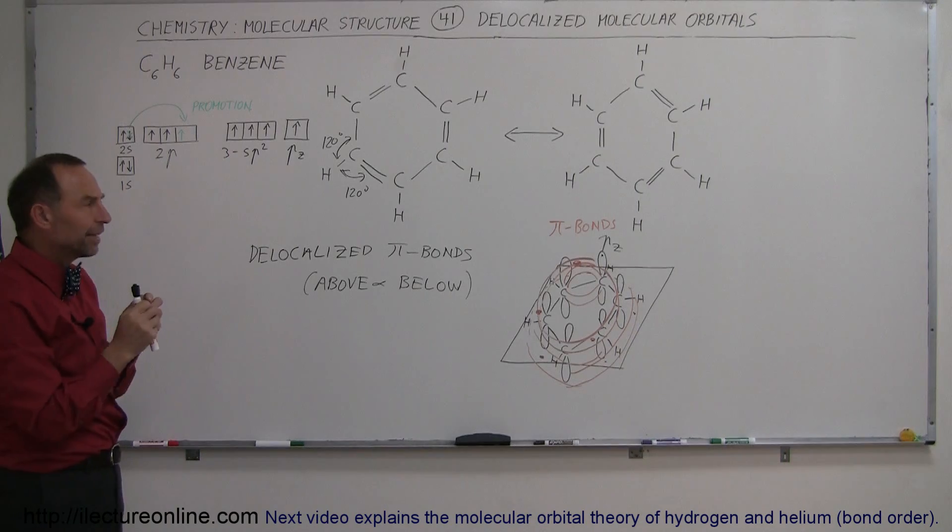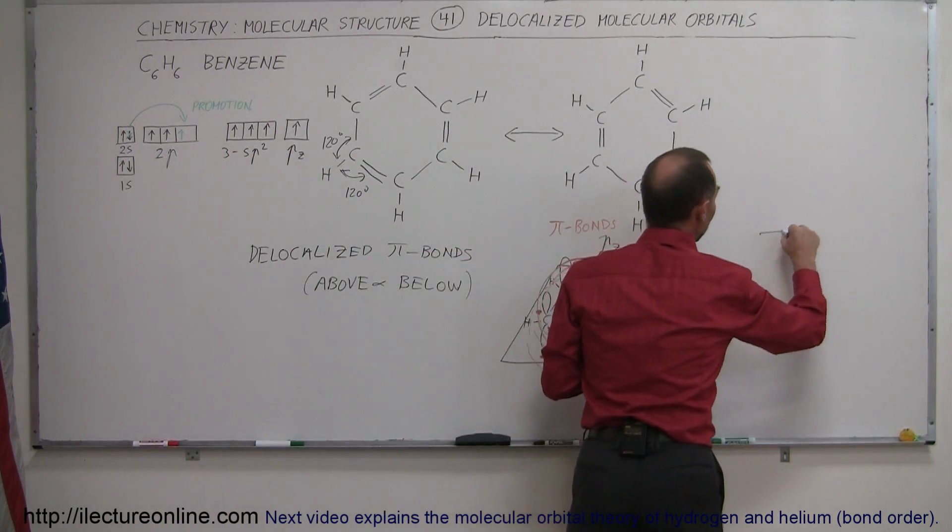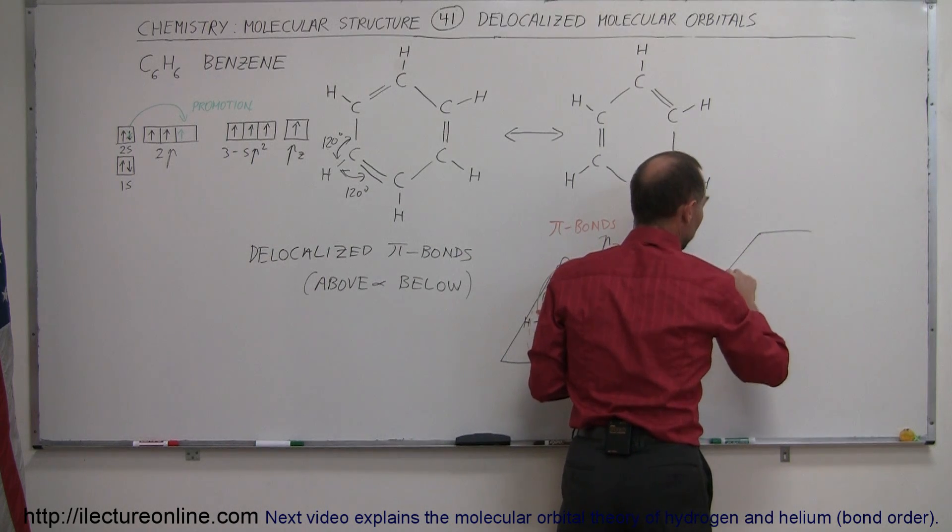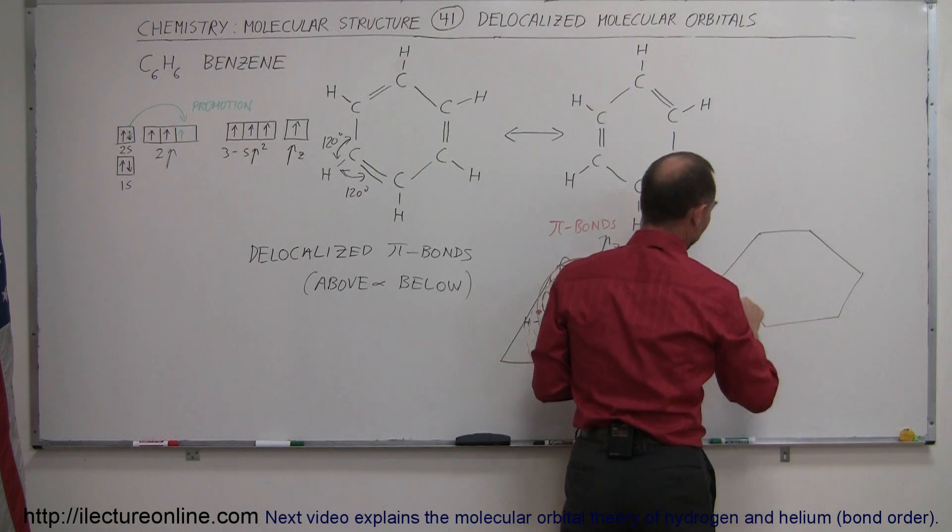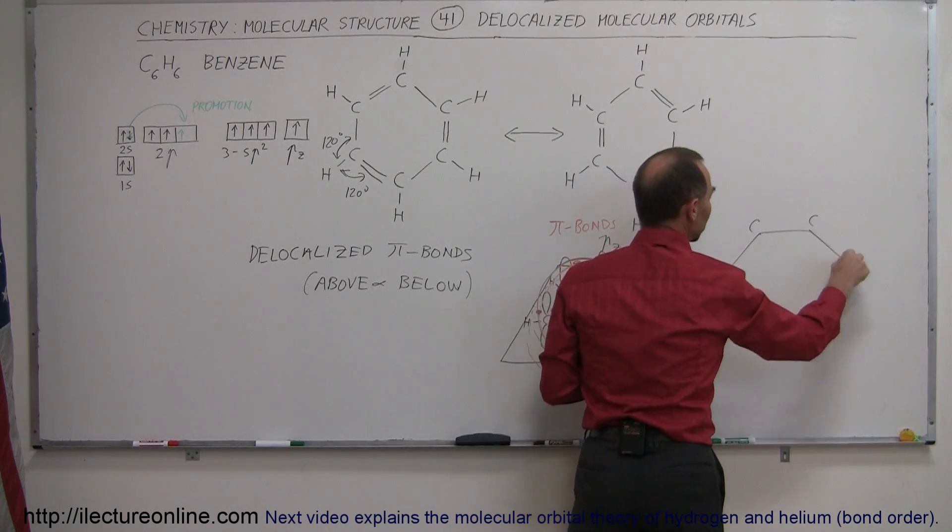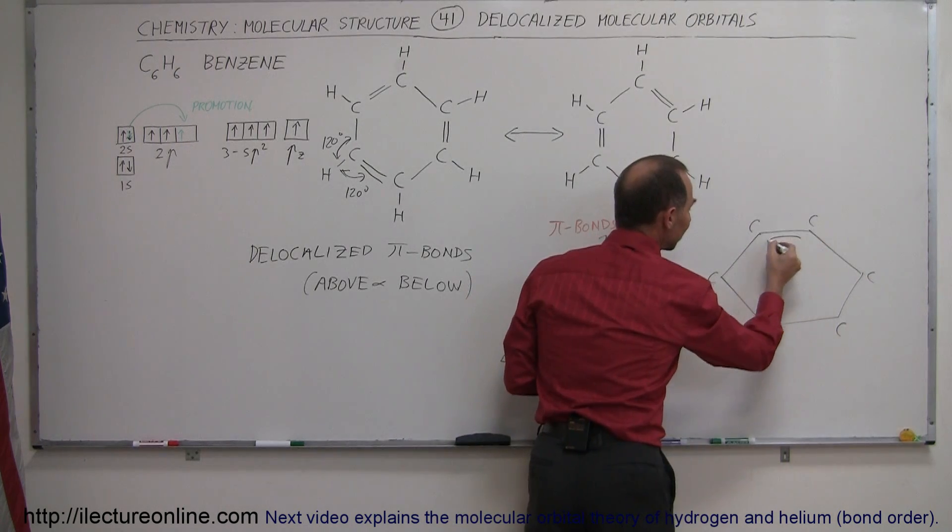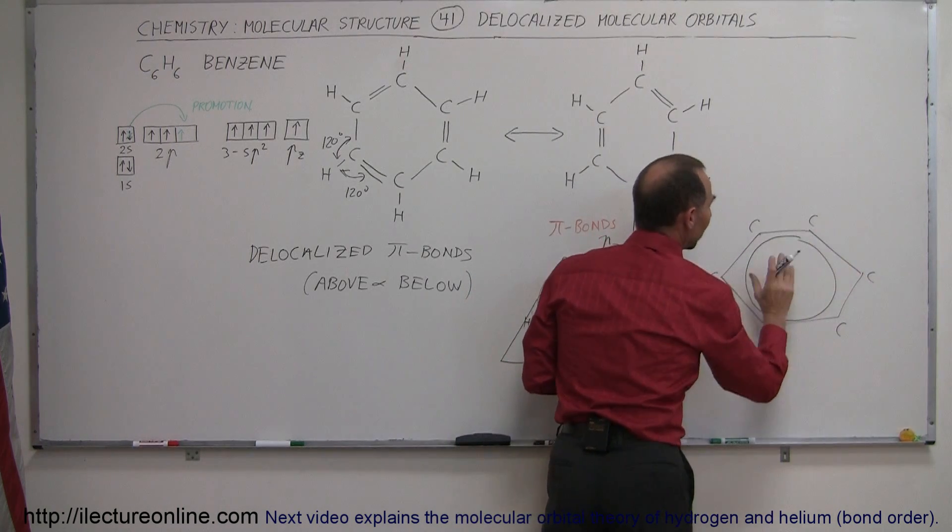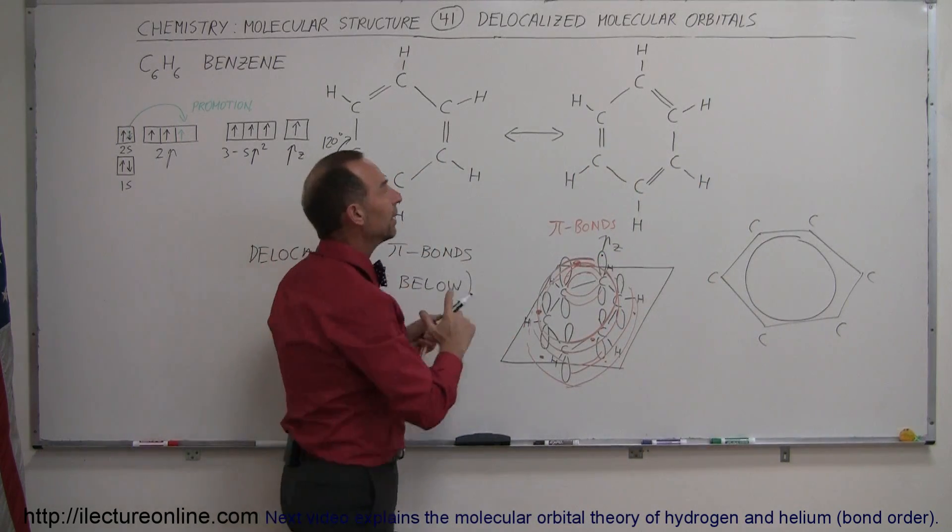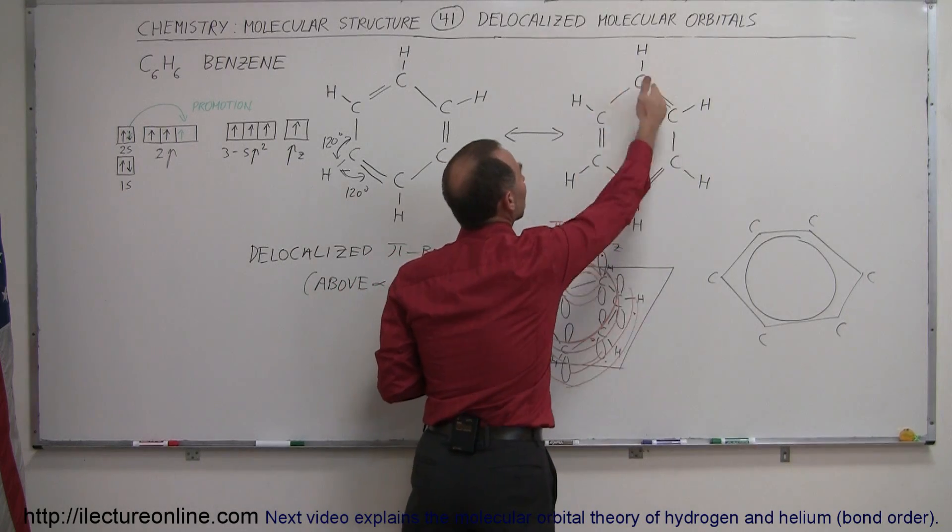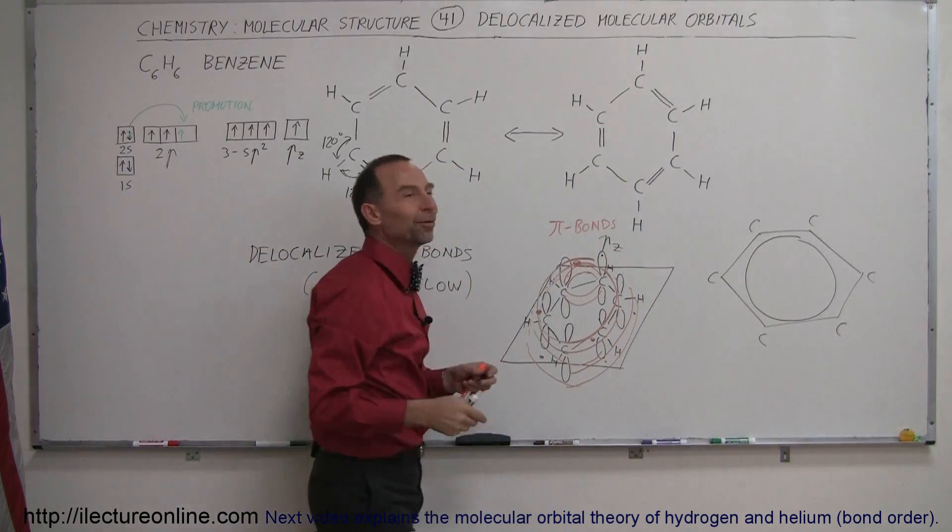Now another way of then indicating what that molecule looks like is we would draw a hexagon like this. So we have the hexagon that would then represent the six carbons, and then we draw a ring inside the hexagon, which then indicates the delocalized pi bonds that then form the double bond on every other bond between the carbons on average.